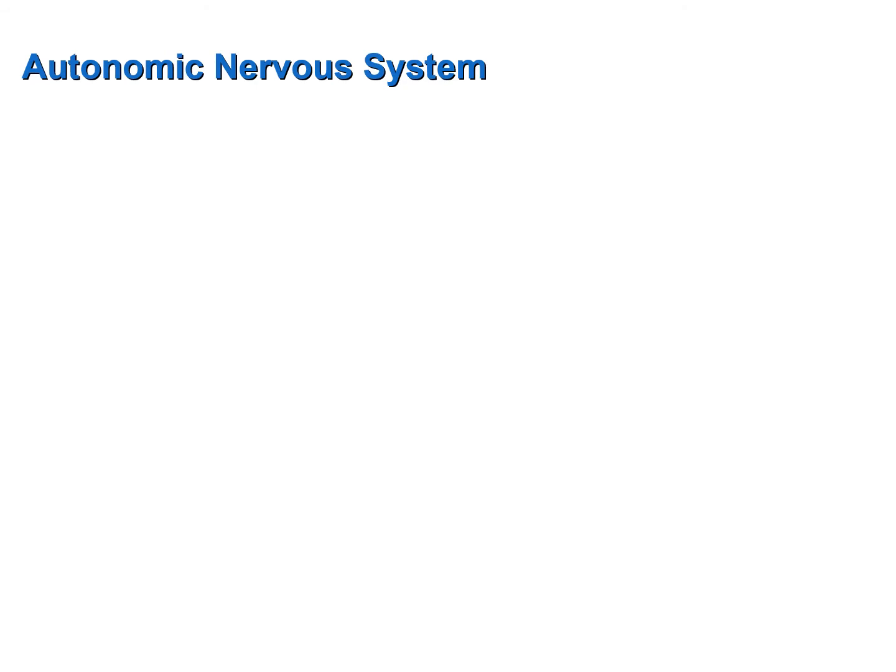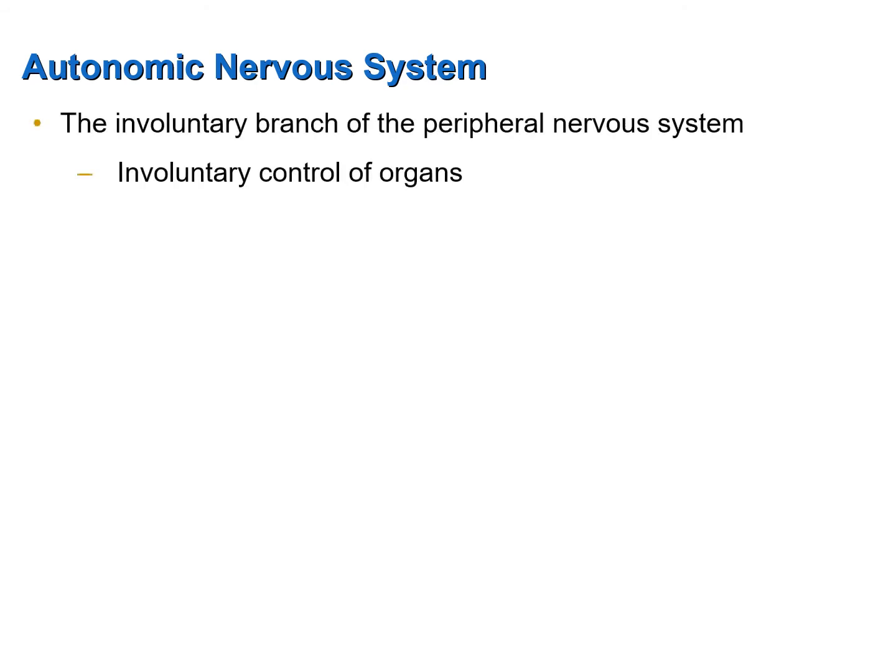The autonomic nervous system is the involuntary branch of the peripheral nervous system — the portion that controls involuntary organs such as blood vessels, the GI tract, the urinary tract, the lungs, etc.